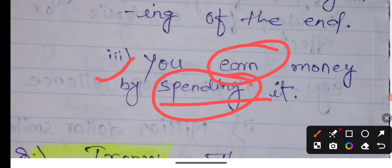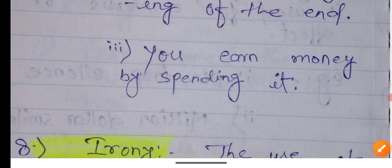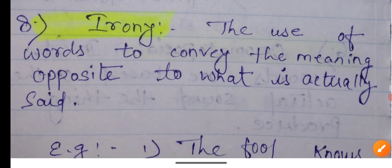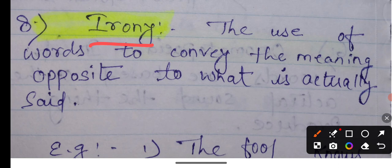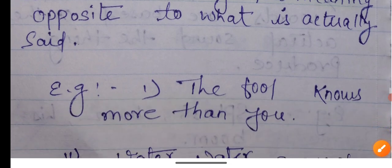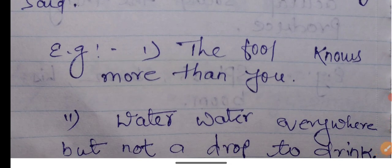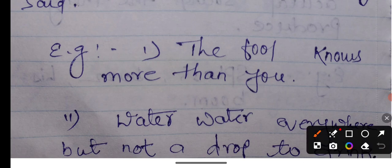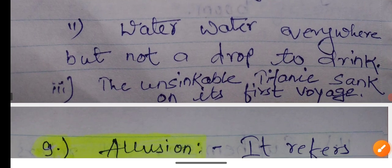If somebody earns money by spending it, earn and spend are opposite words. In this way, you earn money by spending it. If you invest something, that's how paradox works. Next figure of speech is irony. The use of words to convey the meaning opposite to what is actually said. To taunt someone indirectly, not saying directly but opposite, so the meaning automatically comes. The fool knows more than you.